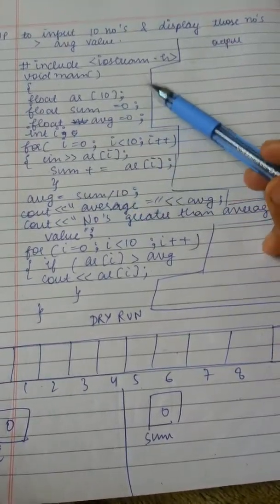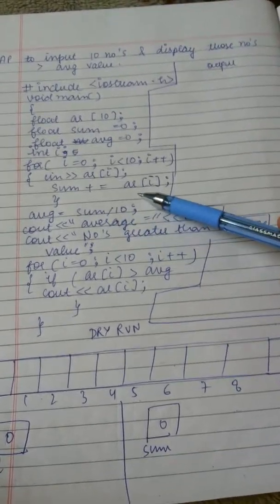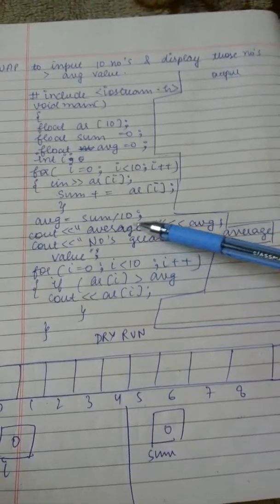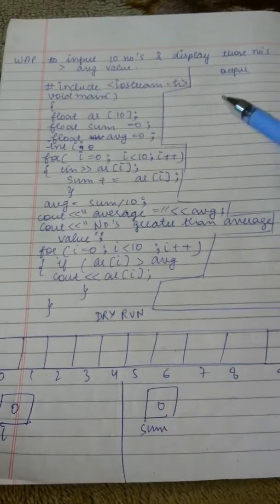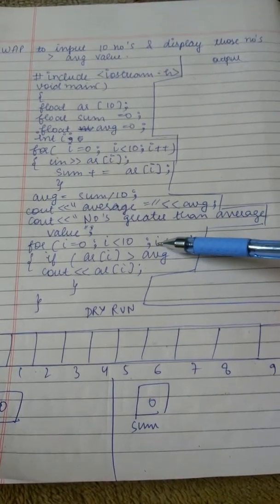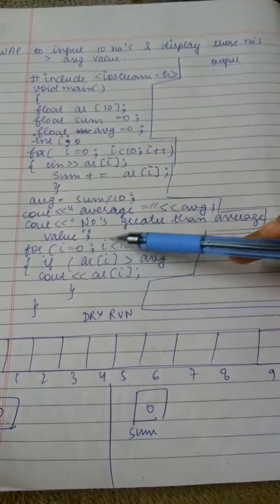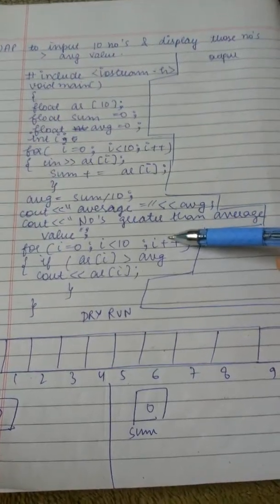As we know, average is sum divided by the observations. Observations are 10, so sum divided by 10. We will display the value of average. Now, to find the numbers that are greater than the average, we will take another loop and initialize it the same as we have done above: i equals 0 while i is less than 10 and i++.